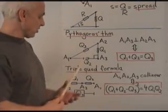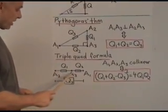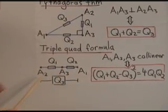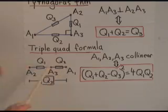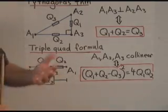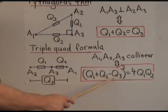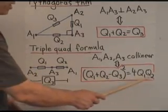And the sister theorem, the triple quad formula, which concerns three points which are collinear. So here are three points, and the three quadrants are that one there is q1, that one is q2, and that one is q3. And the relationship between those three is that q1 plus q2 minus q3 all squared equals 4 times q1 times q2.